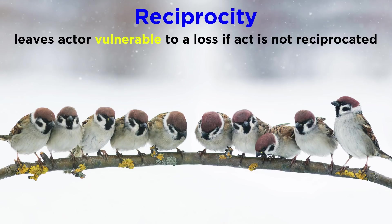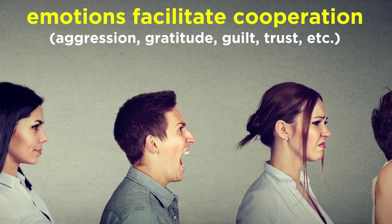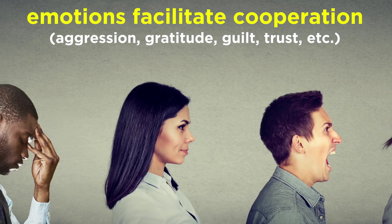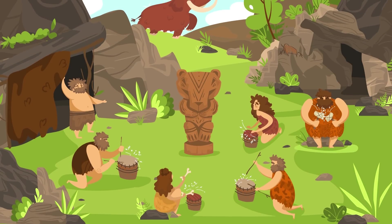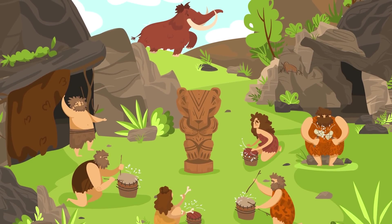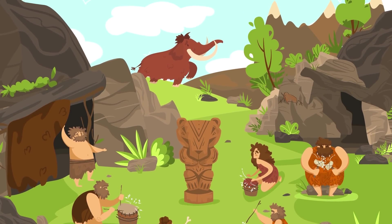Reciprocity is mutually beneficial, but leaves the first actor vulnerable to a loss should the recipient choose not to reciprocate. Cheating describes behavior in which an organism receives a benefit at the cost of another organism. In some ways this should be adaptive if the cheater can get away with it; however, cheaters are often punished. In humans, we have evolved emotions like aggression, gratitude, guilt, and trust to facilitate cooperation. Being evicted from the group — which to our ancestors was basically a death sentence — encouraged reciprocity, even between unrelated strangers.